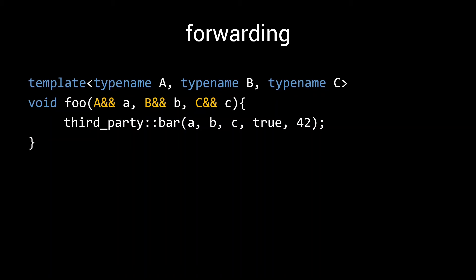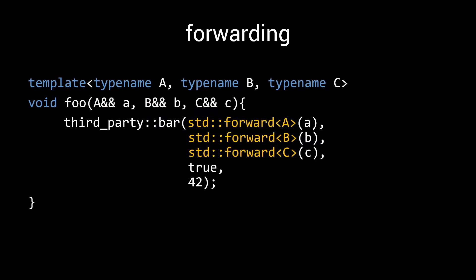For this we'll use the std::forward function. This is a function from the standard library, and we'll call it with our template parameters and their input arguments. To explain exactly how std::forward worked, I would need to again go into the details of template type deduction. So what I'll do instead?